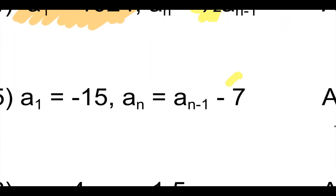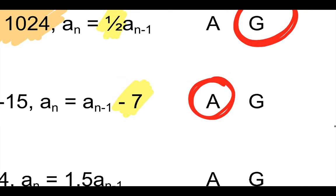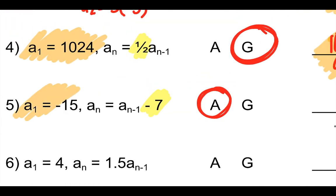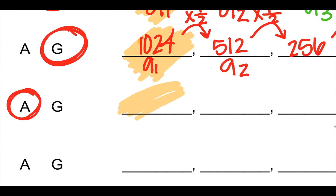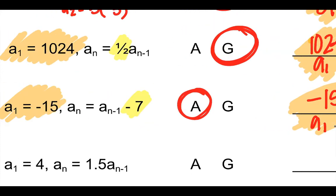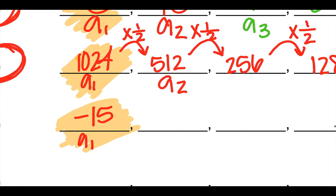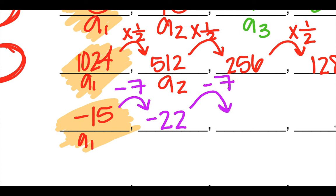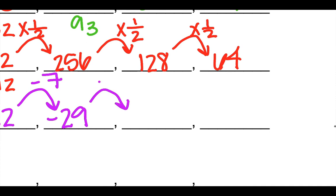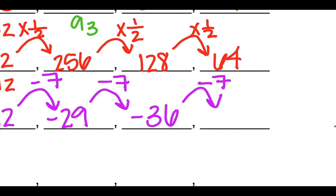Number five: the minus seven tells me it's arithmetic since we're subtracting. A-sub-one is negative fifteen. To find any term, I take the previous term and subtract seven. Negative fifteen minus seven is negative twenty-two. Negative twenty-two minus seven is negative twenty-nine. Negative twenty-nine minus seven is negative thirty-six. Negative thirty-six minus seven is negative forty-three.